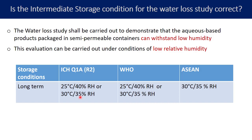There is another alternative long-term condition provided by ICH: 30°C and 35% RH. The variation in temperature is allowed to be ±2°C and variation in relative humidity is allowed up to ±5% RH. The WHO stability guidelines similarly provide long-term storage conditions of 25°C/40% RH or alternatively 30°C/35% RH. The ASEAN guideline specifies a long-term storage condition of 30°C and 35% RH. For the long-term conditions, the reason for lower humidity — 40% RH or 35% RH — is logically clear.